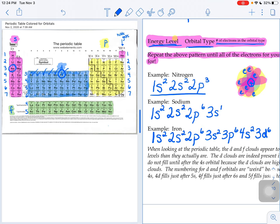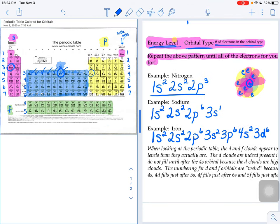If you did have to do something like gallium, like if we kept going all the way here to gallium, it would end with 3d10. And then the numbering goes back to normal when you get over to that P section. So it would end with 4p1.